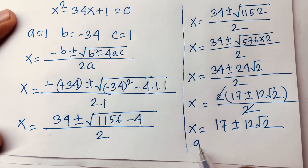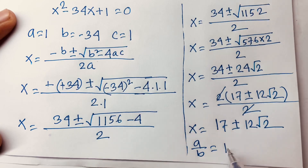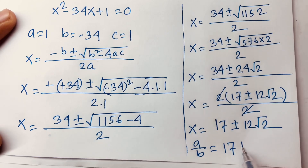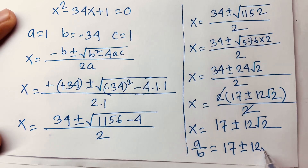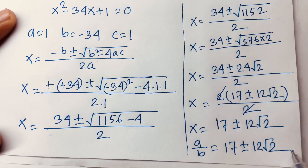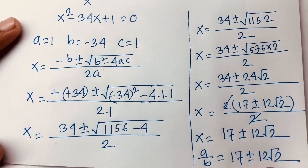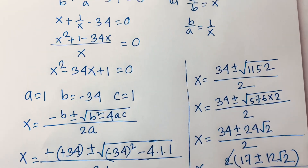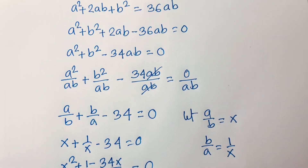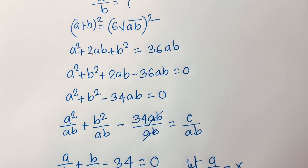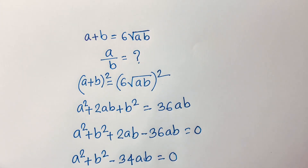Remember that x is equal to a over b. So the final answer is: a over b equals 17 plus or minus 12 square root 2. Thank you all. If you enjoyed this video, please subscribe to my channel and like this video. Goodbye!